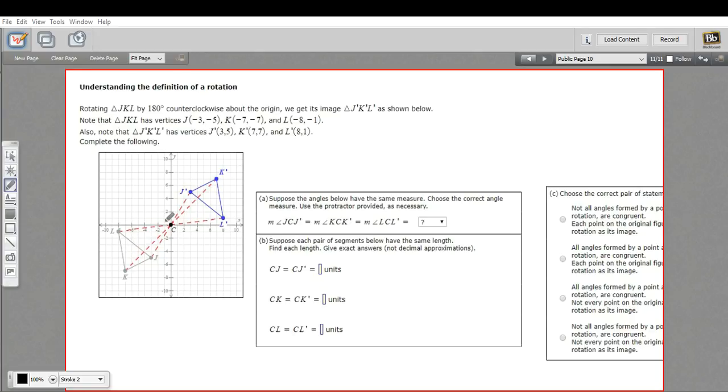They say it was counterclockwise. I guess it doesn't really matter. The result is going to be the same. So this went 180 degrees that way, and we ended up with this J prime K prime L prime.